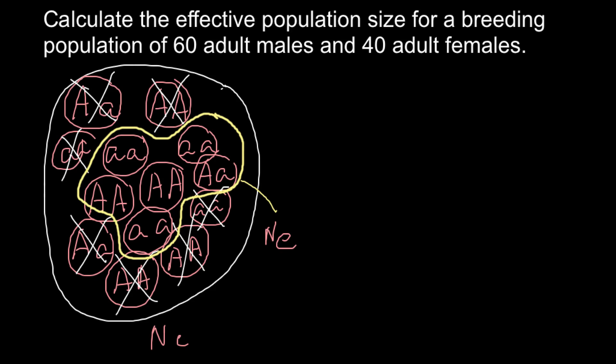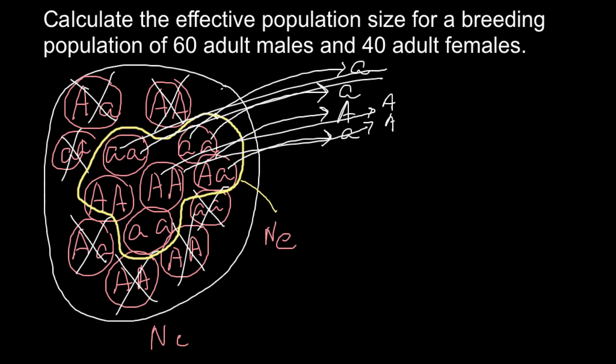We use Ne. As you see, all these individuals may donate their gametes for the next generation. For example, this individual would produce only one type of gametes, that is small a. And this one can produce capital A and small a. And this one would produce capital A. And this one would donate only small a alleles.